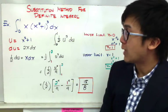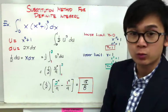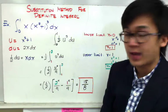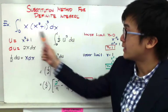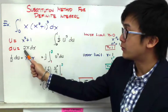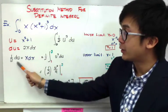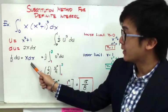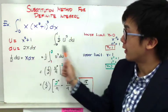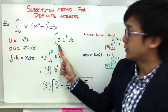We still use the same strategy: set u equal to x squared plus 1 and take its derivative, giving du equal to 2x dx. Since 2x dx is not in the original function — we only have x dx — we divide both sides by 2, so one-half du equals x dx. Replacing all variables, we now have one-half times u cubed du from 0 to 1.